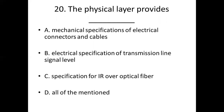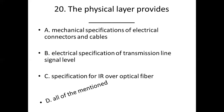Question 20: The physical layer provides — Option A: mechanical specification of electrical connectors and cables. Option B: electrical specification of transmission line signal level. Option C: specification for IR or optical fiber. Option D: all of the mentioned. Answer: Option D, all of the mentioned.